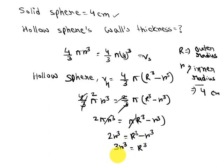3 times 4³ will be R³, so the value of R will be R = 5.768 centimeters. This will be the outer radius, the hollow sphere's wall thickness. This is our final answer. I hope you find this video useful, thank you.